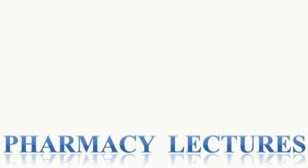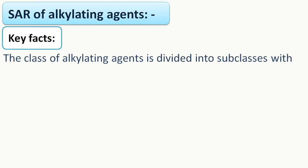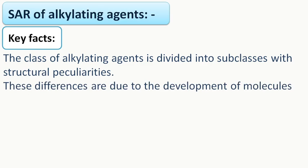Hello everyone, welcome to pharmacy lectures. Today we are going to discuss the SAR of alkylating agents. Before starting SAR, we must know some key facts. The class of alkylating agents is divided into subclasses with structural peculiarities: there are alkyl sulfonates, there are nitrosoureas, and there are platinum complexes.